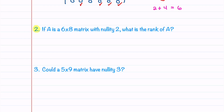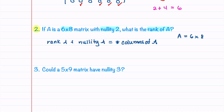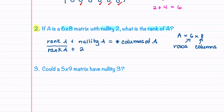In our second example, A is a 6×8 matrix with a nullity of 2. What is the rank? Using the rank theorem: rank of A plus nullity of A equals the number of columns. Our matrix has 6 rows and 8 columns. Plugging in: rank of A plus 2 equals 8, so the rank of A is equal to 6.